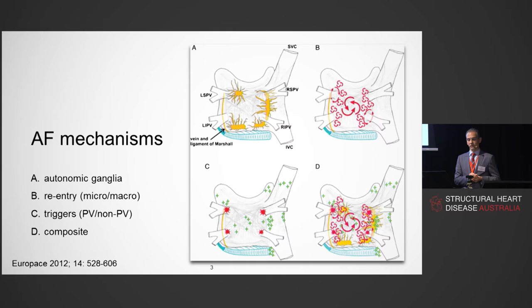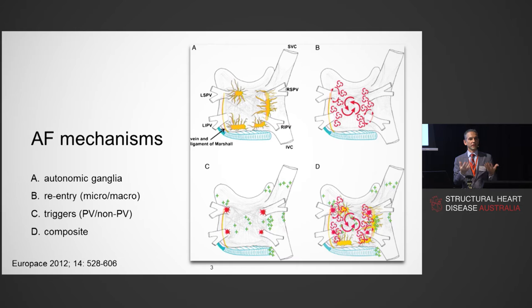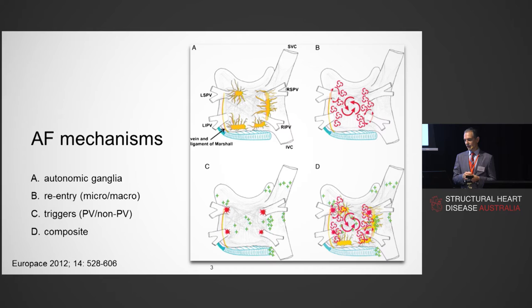The green stars show other focal triggers, which we always target if we can induce or find them. Sometimes you don't find them until after ablation, when the patient no longer gets AF but gets a focal atrial tachycardia from the posterior wall, the appendage, right atrium, SVC, crista terminalis, or sometimes the coronary sinus, which has muscular connections to the left atrium with independent electrical activity.